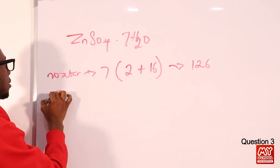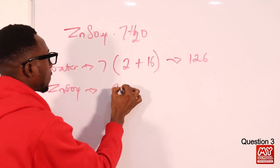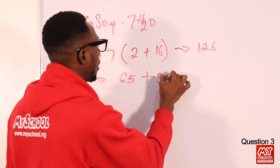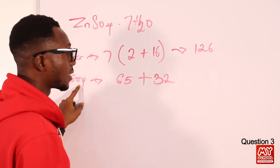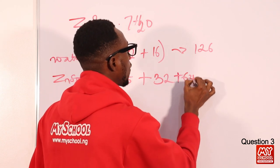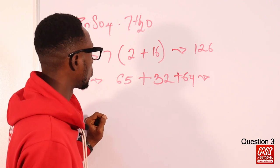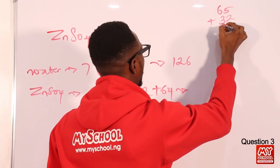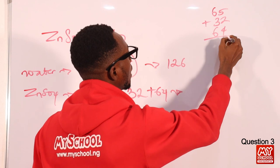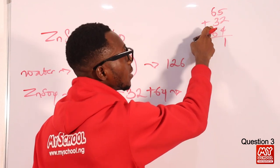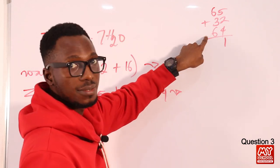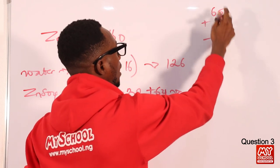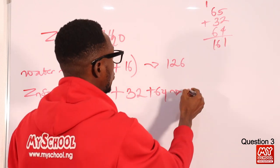Now for the molar mass of zinc sulfate (ZnSO₄): zinc is 65, plus sulfur 32, plus oxygen 16 × 4 = 64. Adding: 65 + 32 + 64 = 161 g/mol. So the total molar mass of ZnSO₄·7H₂O is 126 + 161 = 287 g/mol.